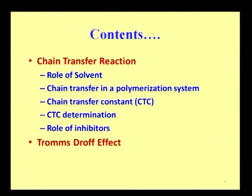In the earlier lectures, we have seen there are important steps in the free radical polymerization mechanism. The very first step is initiation, followed by propagation, and then finally termination. Under termination, you have importantly 3 methods: the first method is coupling, otherwise called dimerization; the second method is disproportionation; and the third type of termination is chain transfer.